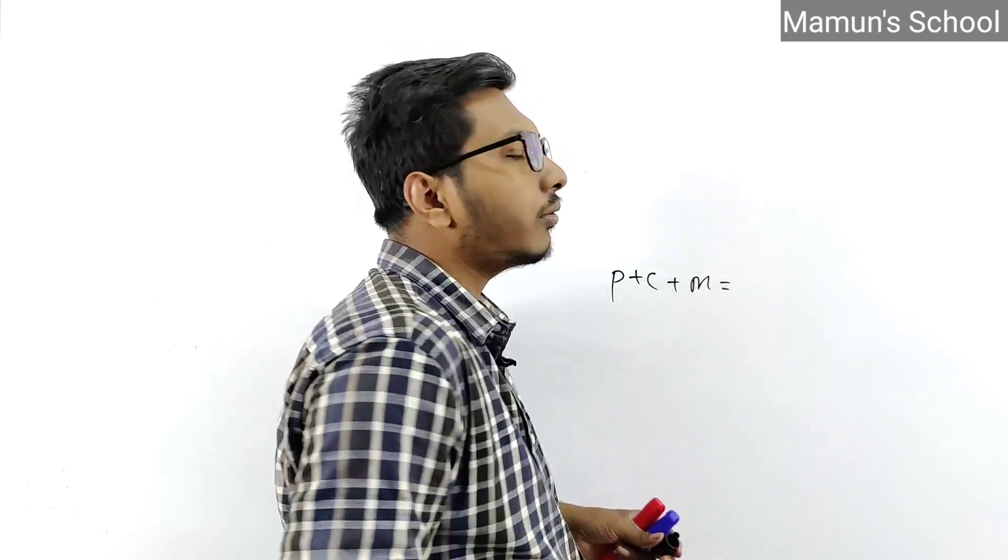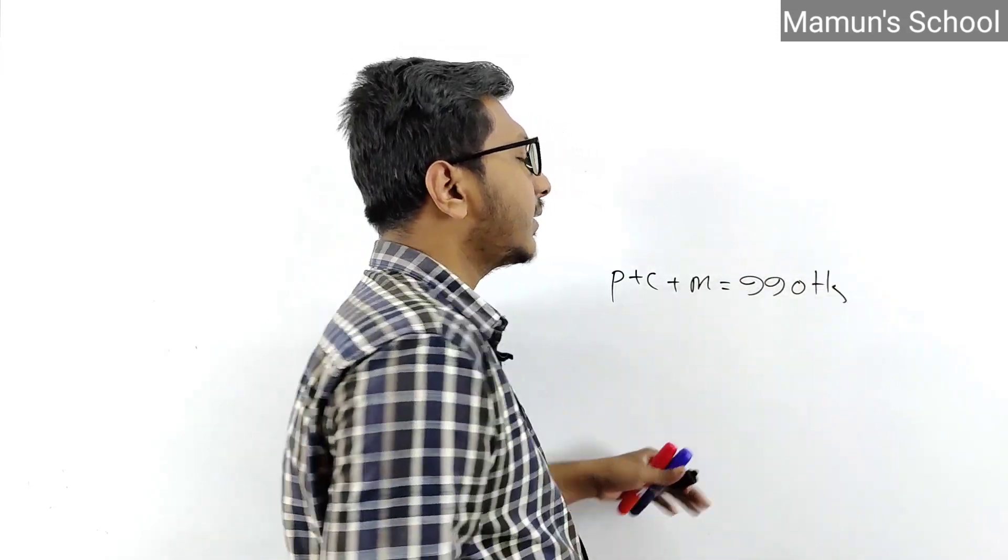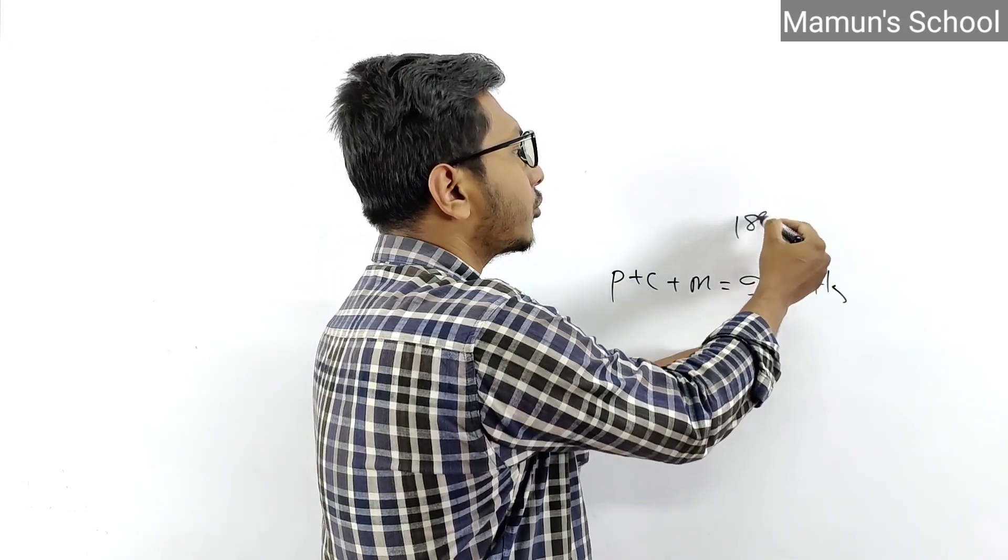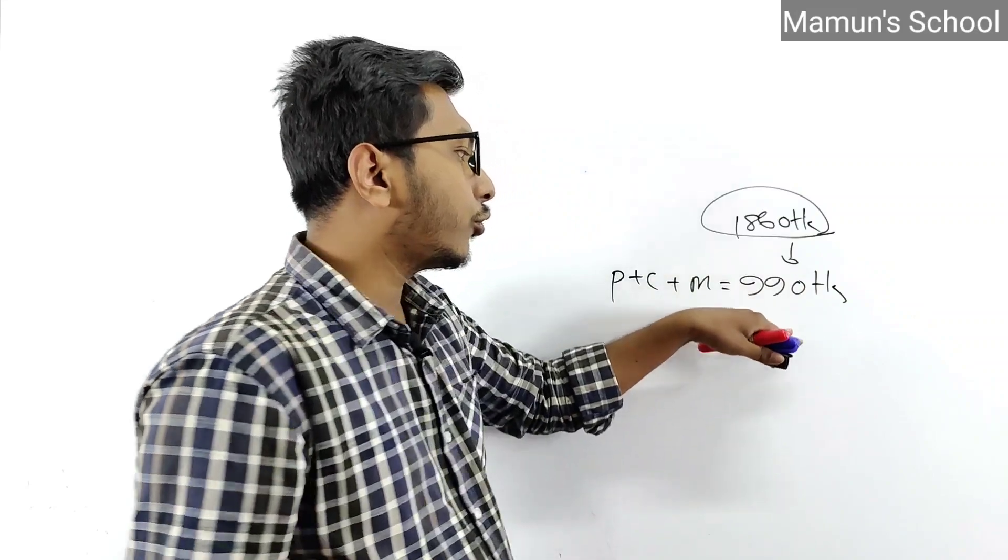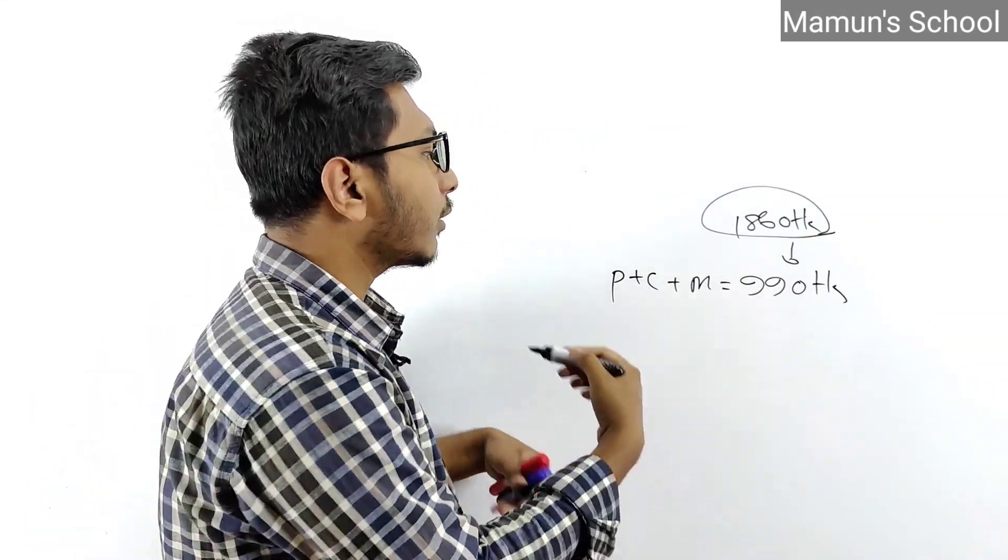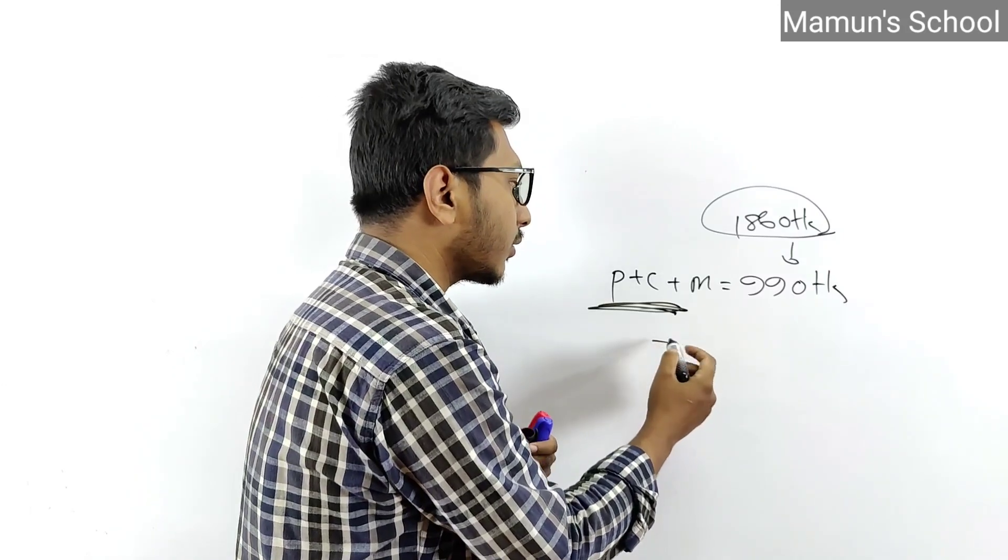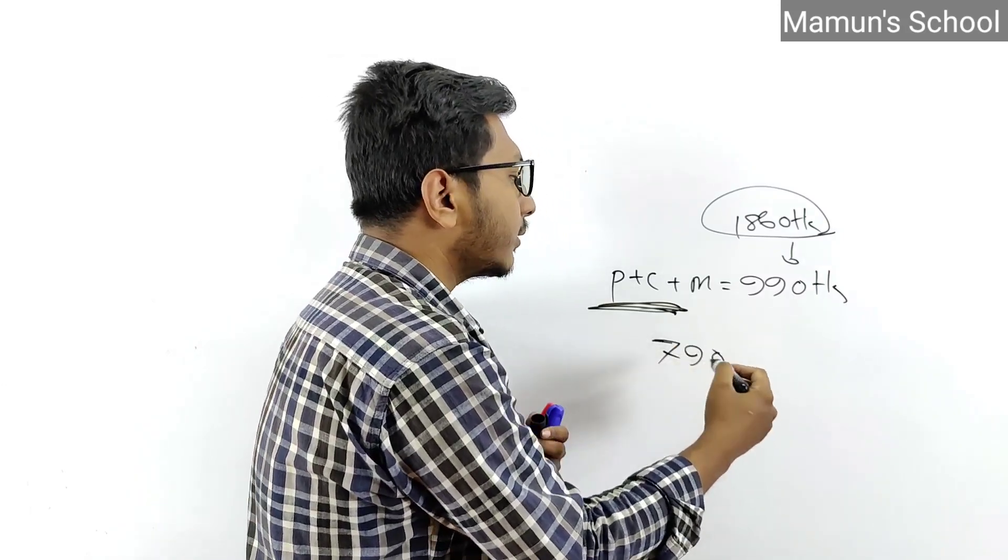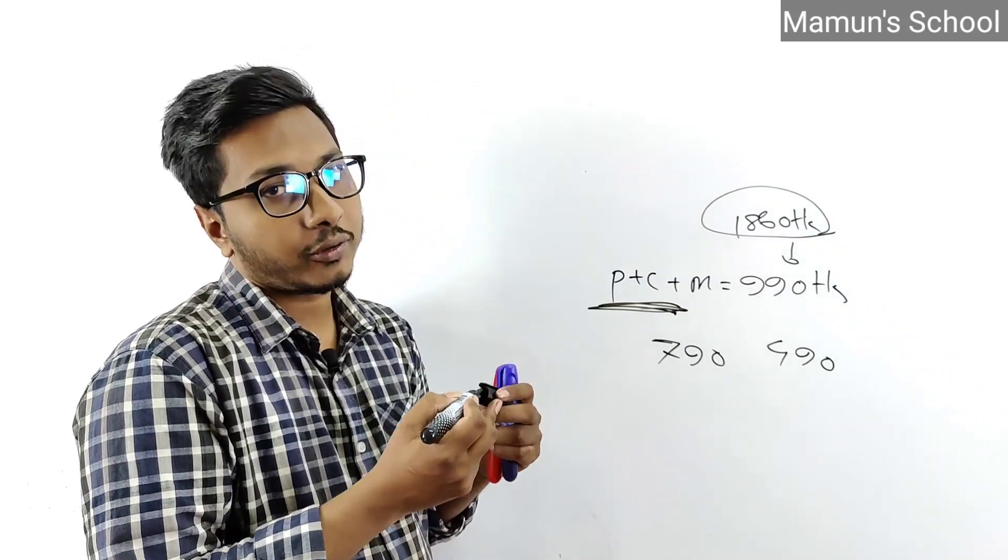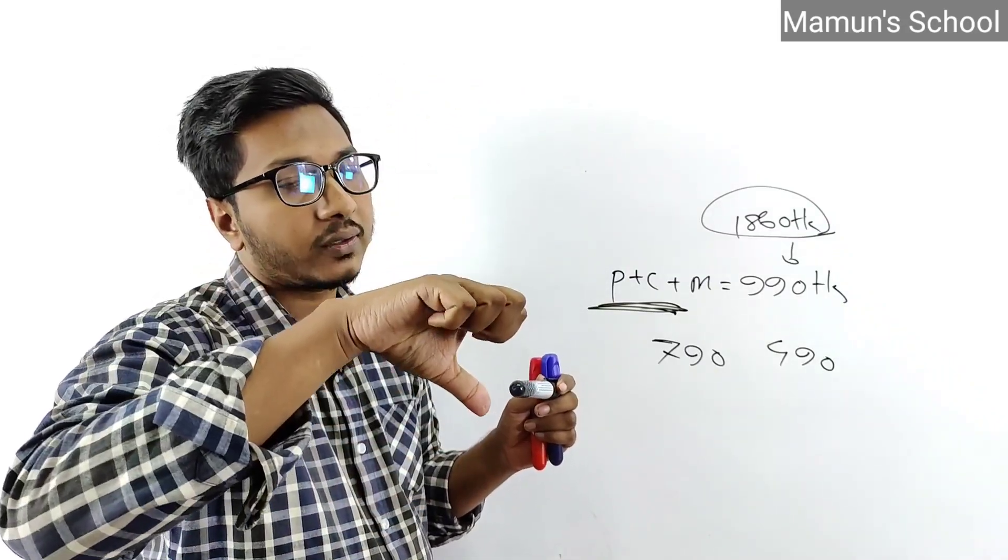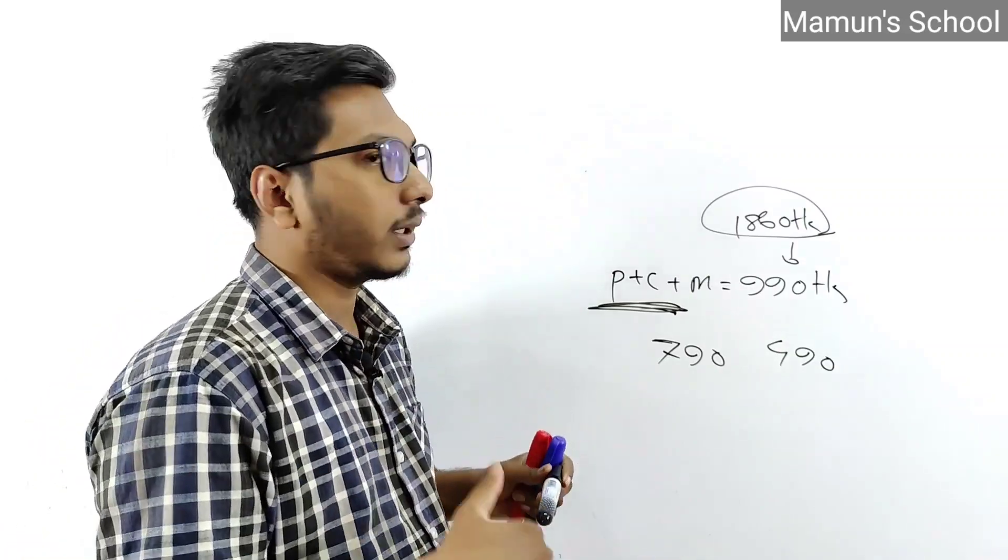We have courses for Dhaka University standard in physics, chemistry, and mathematics. There's history from 2003, history from 2008, and physical courses available. Currently there's a 50% discount. You can take a demo class across different courses.